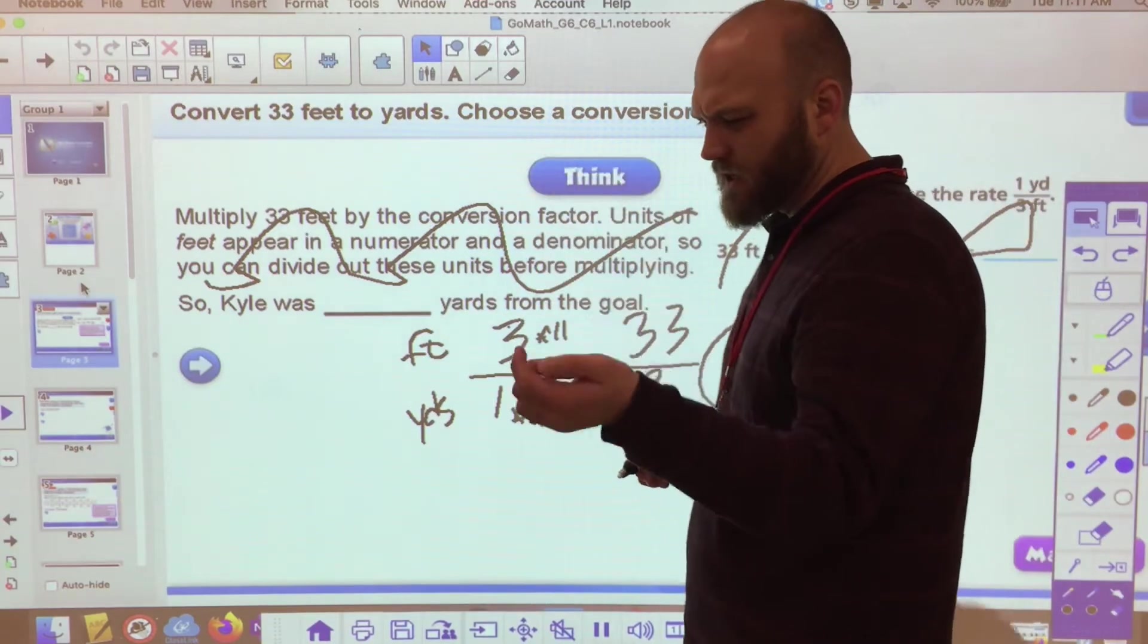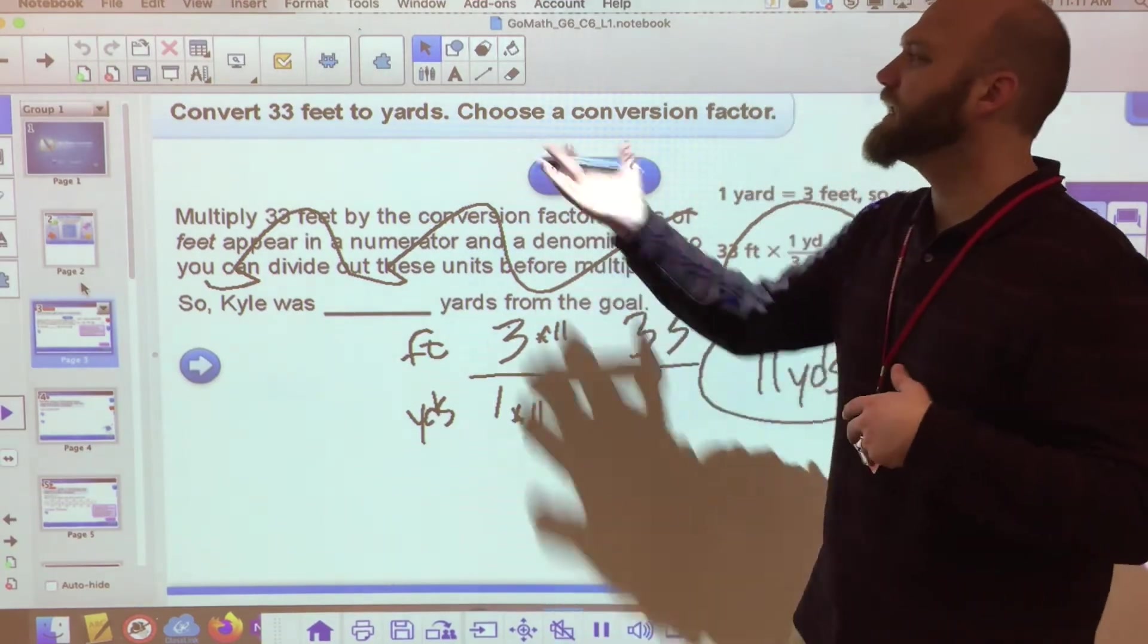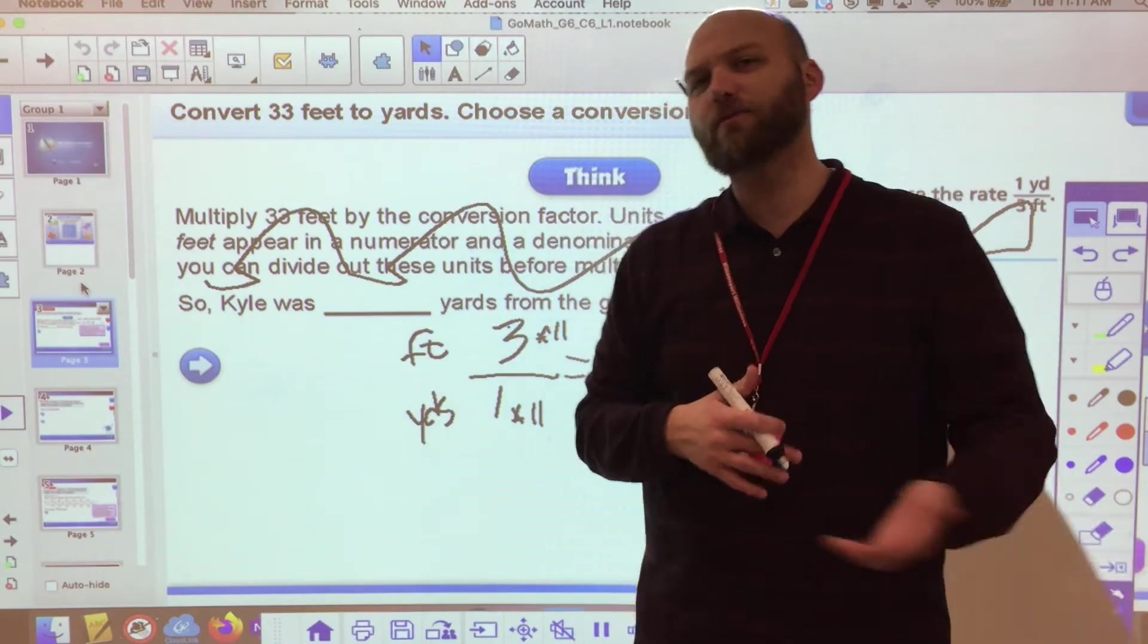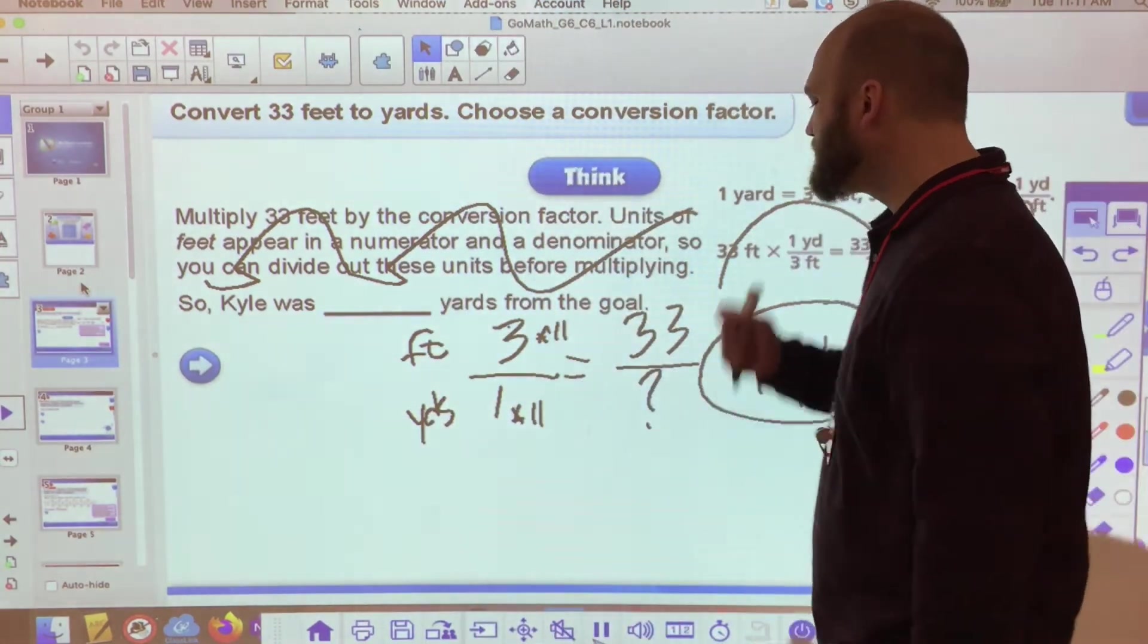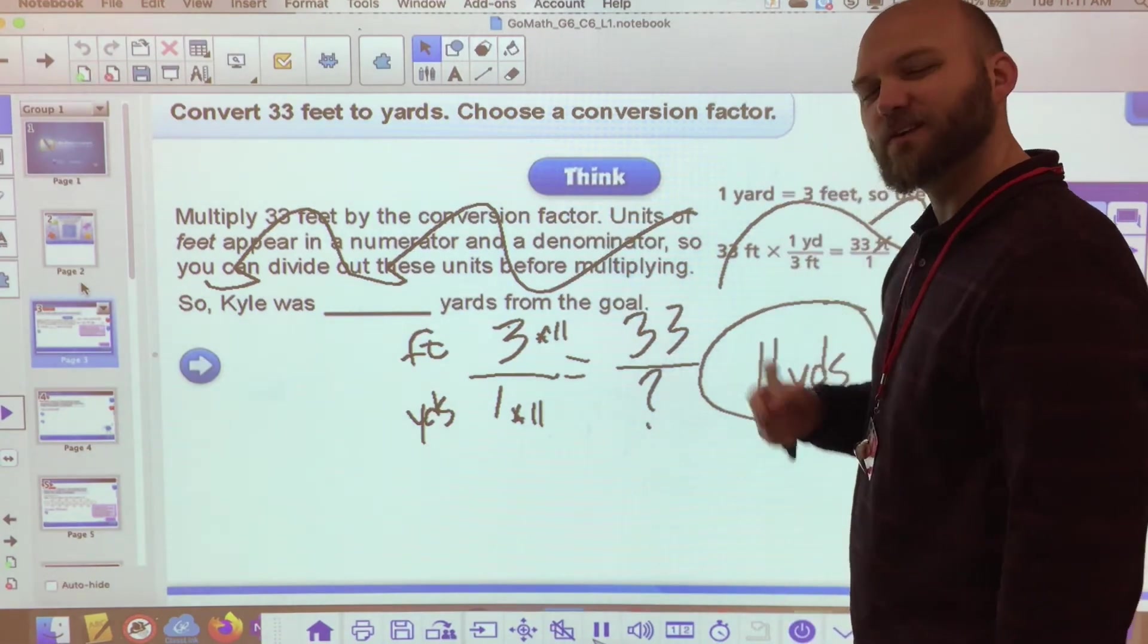And you might say, well, Mr. W, if I know that there's three feet in a yard and I have thirty-three feet, can't I just divide it by three and then I would get yards? Yes, absolutely you can. And that's sort of what we did here, right? Let's take a look at another one.